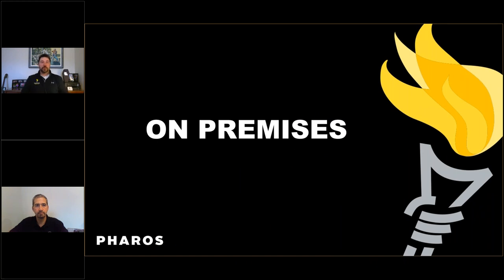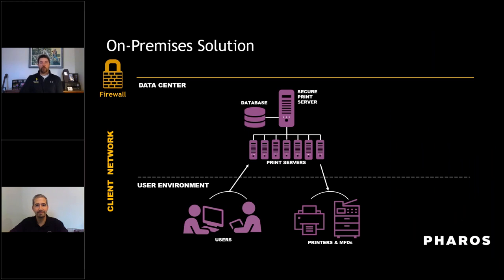We'll start in the on-premise world. This is traditional Uniprint — going back to when we first started the platform in 1992, it is a server-based application and has predominantly always been on-premise. Within your firewall, you have an application server we typically call the principal server, a SQL database where we publish what we see happen, and some supporting servers — print servers for parking jobs for SecurePrint or mobile print servers. You have your users who are putting jobs into the system and your devices connected so users can retrieve their jobs.